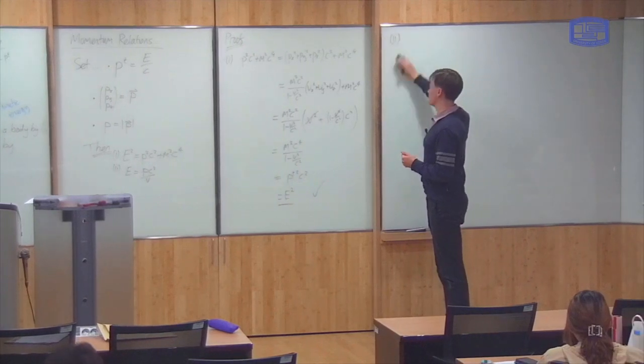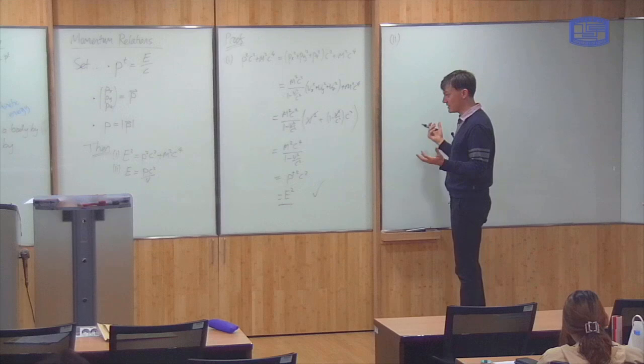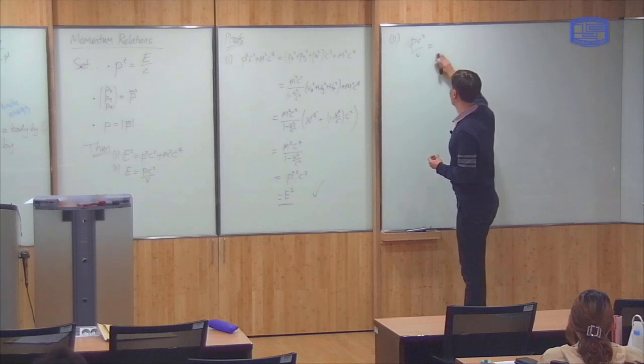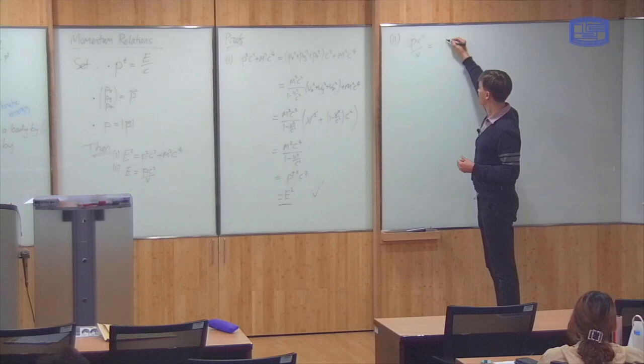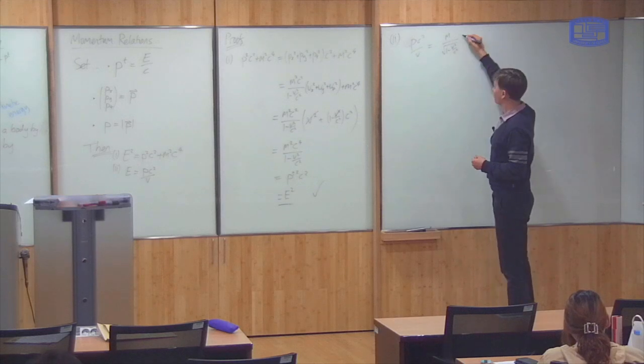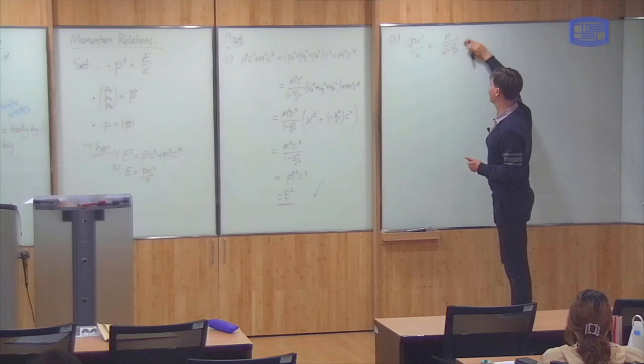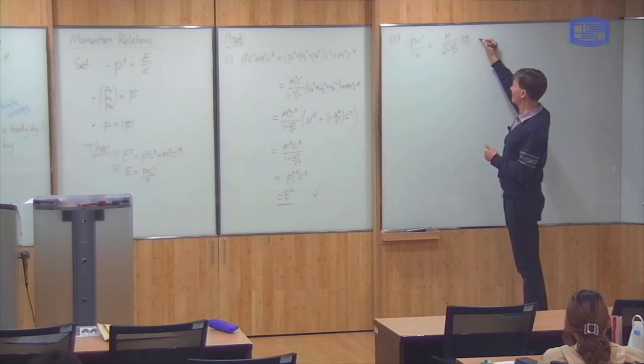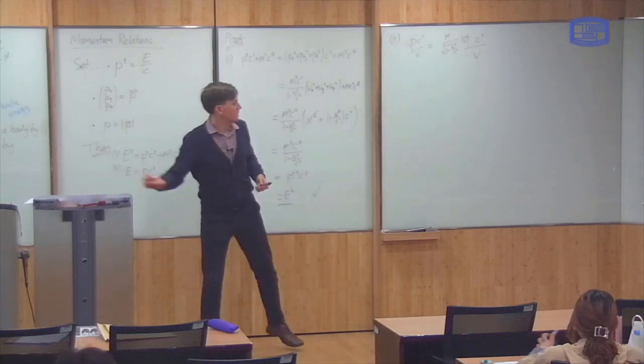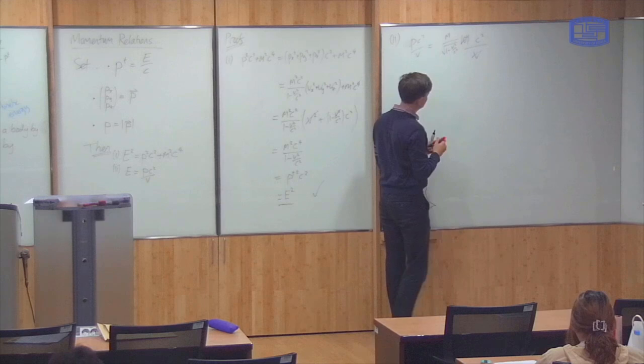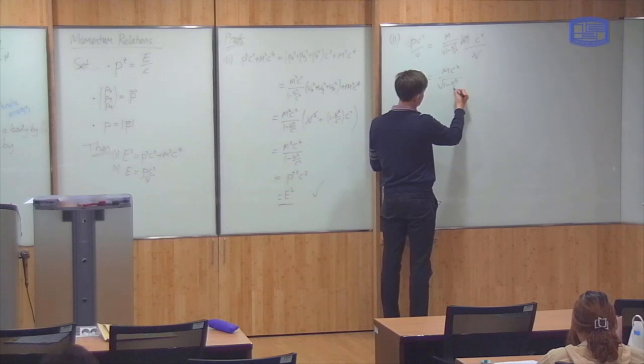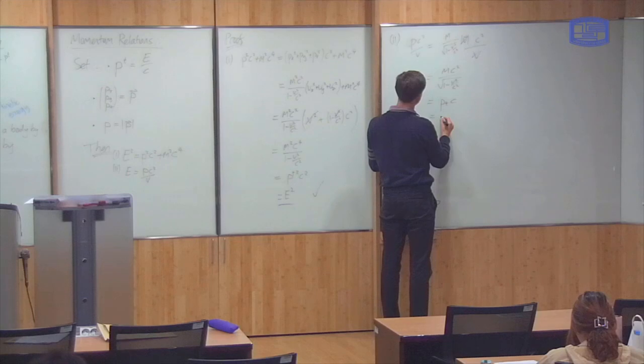The second one is even easier. We'll do it the other way. p c squared over v. This is equal to m over square root 1 minus v squared over c squared times v, the length of the vector v, times c squared over v. But the length of the vector v is just what I've called the number v here. So this cancels that. And then this is just m c squared over square root 1 minus v squared over c squared. It's pt times c, which is E.